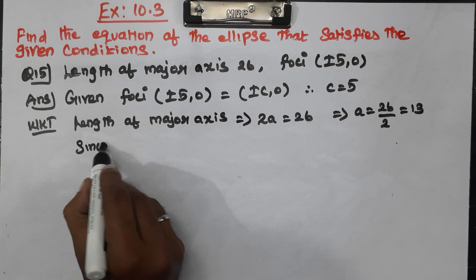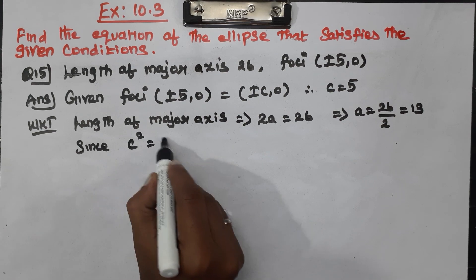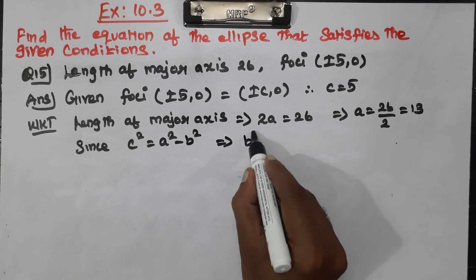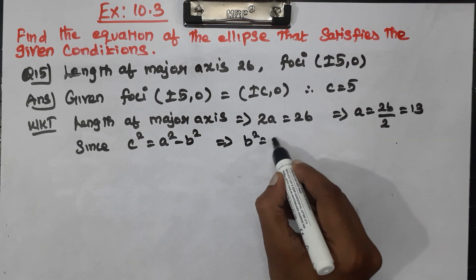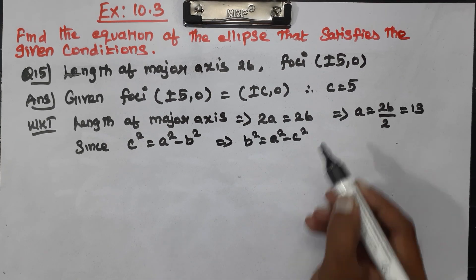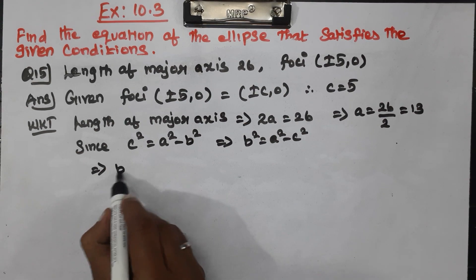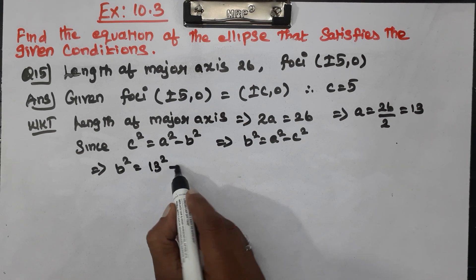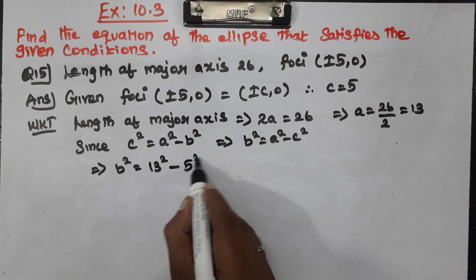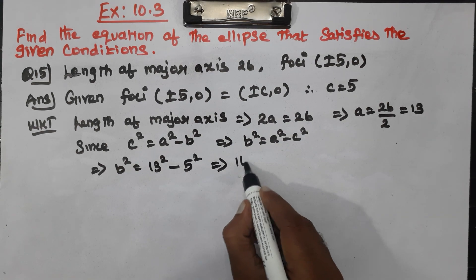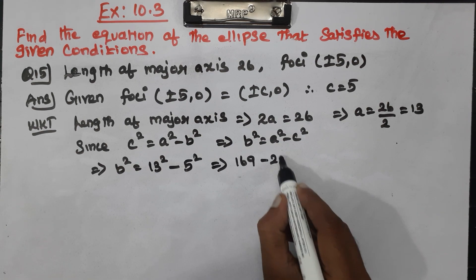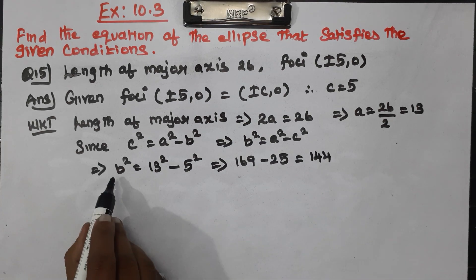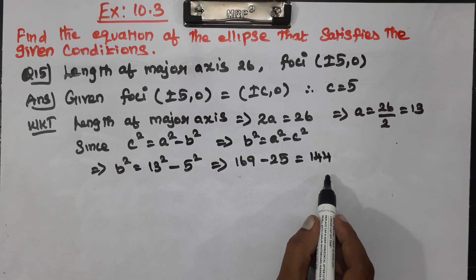Since c squared equals a squared minus b squared, the formula for b squared is a squared minus c squared. So b squared equals 13 squared minus 5 squared, which is 169 minus 25, equals 144. So b squared equals 144.